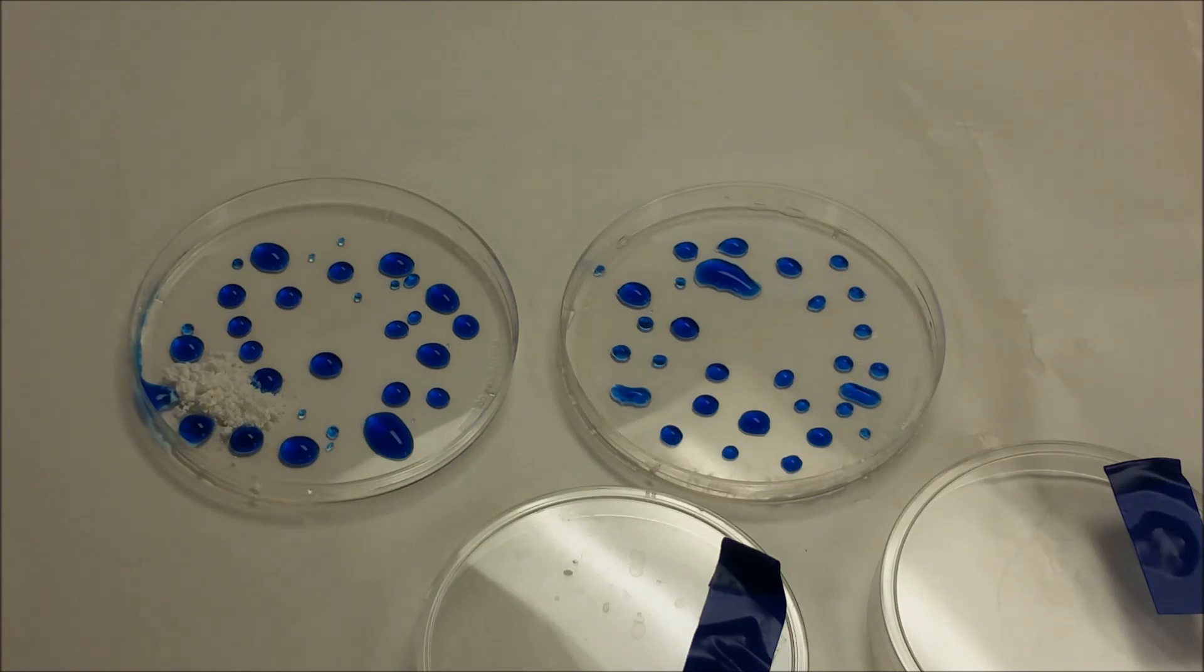These petri dishes we're going to use for a mini acid rain activity here. We've set up some bromo-cresol green in both of them, and little droplets all the way around.